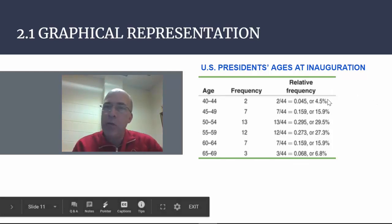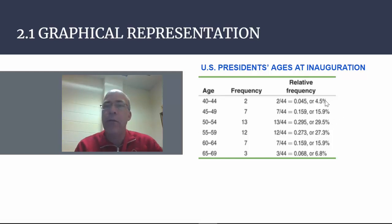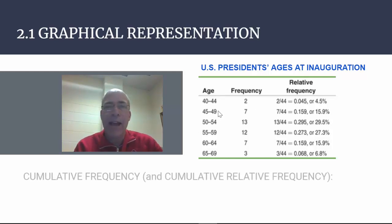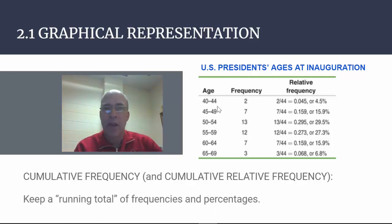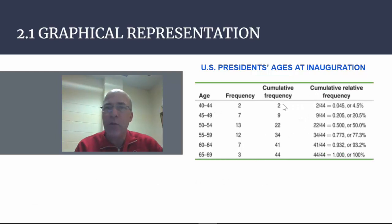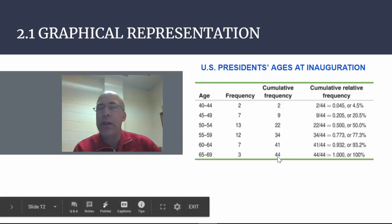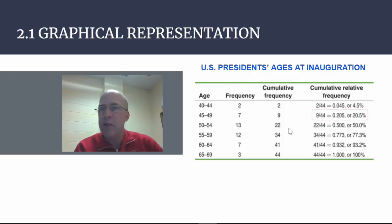We can also add these relative frequencies together. Taking 4.5 and 15.9, we can find the total percentage of presidents who were below age 49. That is called the cumulative frequency and cumulative relative frequency — it just means add as you go along. We keep a running total: 2 presidents, then 7 more gives 9, then 13 more gives 22, and so on until all 44 presidents are accounted for. Dividing by 44 gives the cumulative relative frequency. For example, 20.5% means that 20.5% of the presidents were age 49 or younger at inauguration.